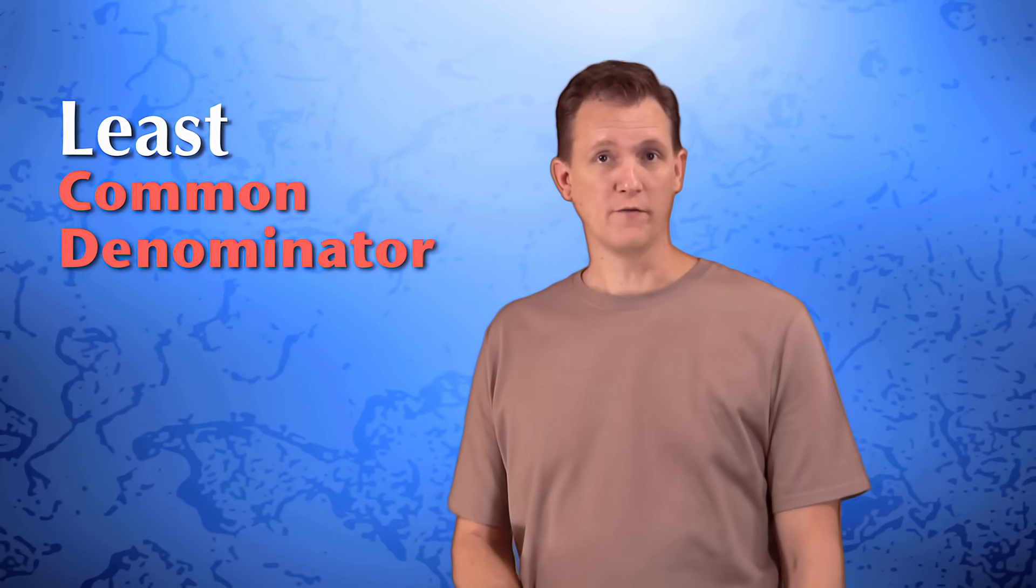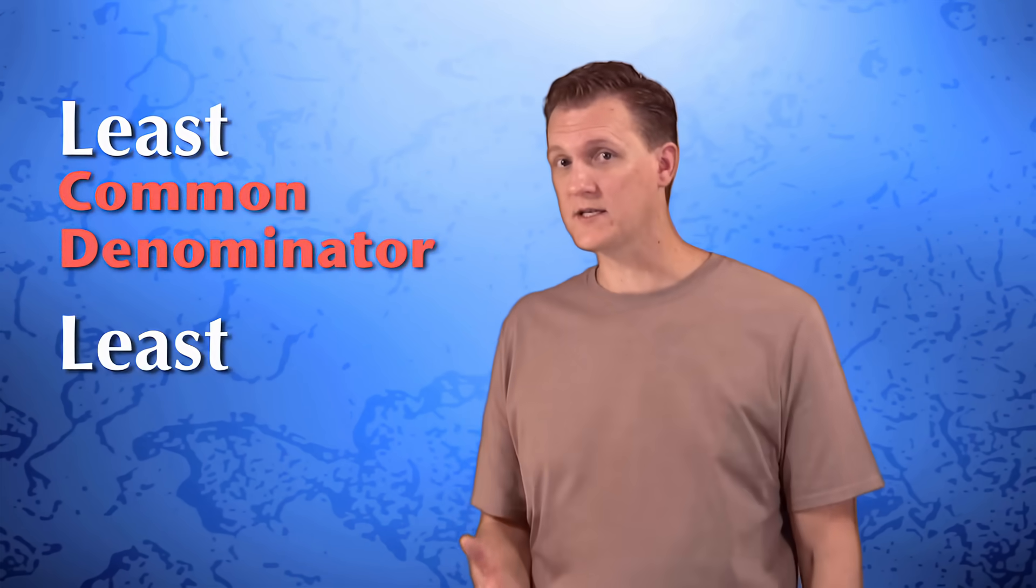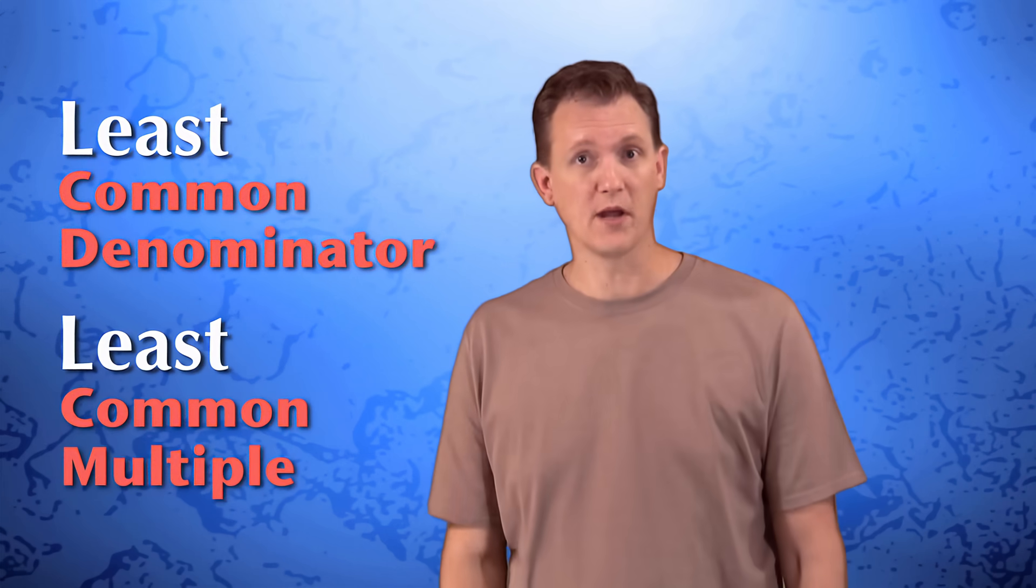To find the smallest common denominator of two fractions, we need to figure out what the smallest or least common multiple of the two bottom numbers is.